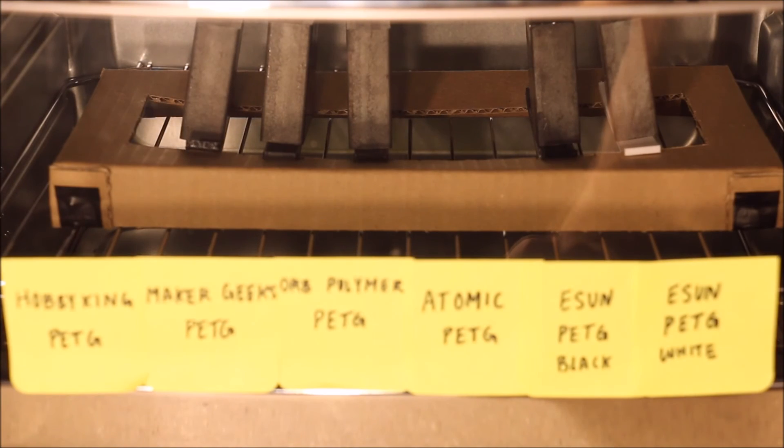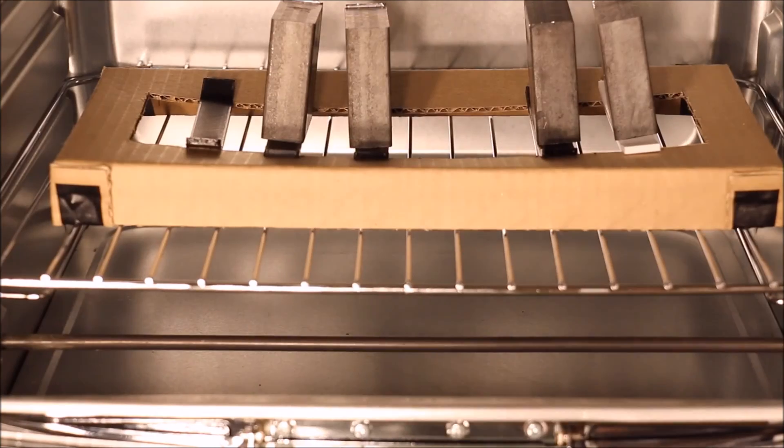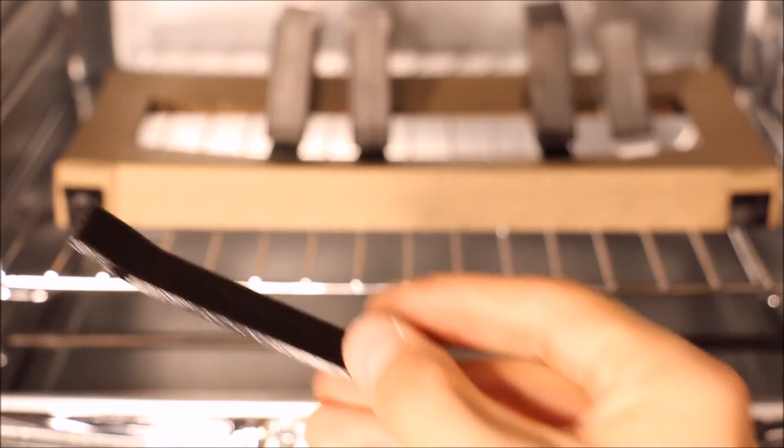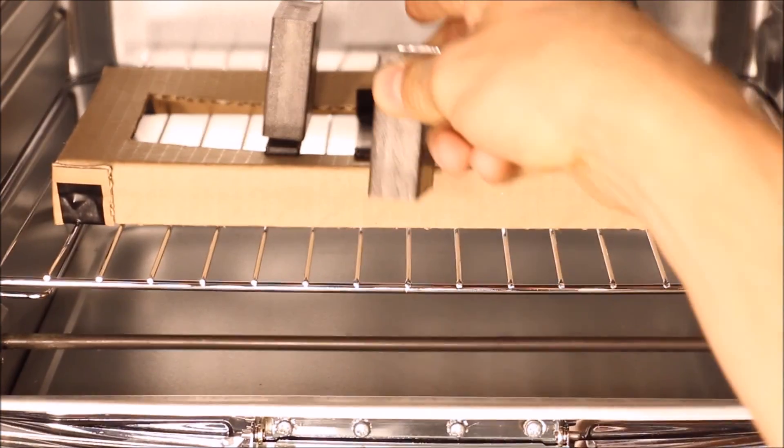It does seem that the white E-Sun PETG is warping a little less than the black. So it appears the Hobby King shows significant signs of warping. I'm going to remove it before it falls. The Orb Polymer as well.